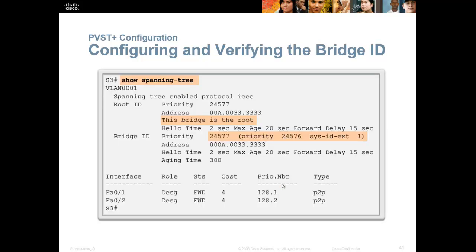The 'show spanning-tree' command gives you a lot of information: your priority, whether this bridge is the root, the hello time, and what role each port is in. From the root bridge, all ports are designated ports — you're not going to shut a port off on the root bridge because it's the master deciding how to get everywhere.